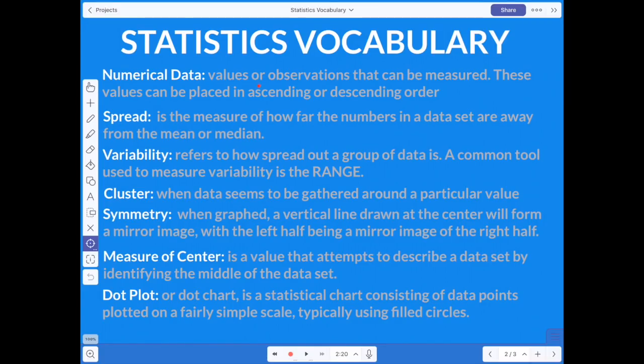Numerical data. These are values or observations that can be measured. These values can be placed in ascending or descending order. You can put them from least to greatest, or you can put them from greatest to least. They're numbers, and that's what we're working with mostly is numbers. Spread is the measure of how far the numbers in a data set are away from the mean or the median. So if your average age is 12, then the spread of the data can be from the 11 to the 13, and you can say how far away those are from that. Variability refers to how spread out a group of data is. A common tool to measure variability is the range.